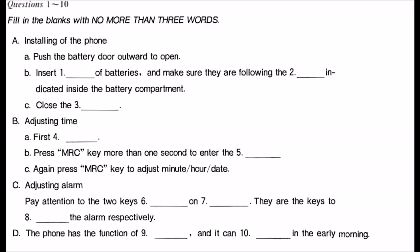Now, let's come to the second step, adjusting time. Press time key first, then press MRC key, more than one second, to enter the time adjusting state. Have you seen the second digit flashing now? Yes, it is flashing now. So, let's go on. Press MRC key again to adjust minute hour date. Have you finished? Yes, all the digits have been flashing successively.